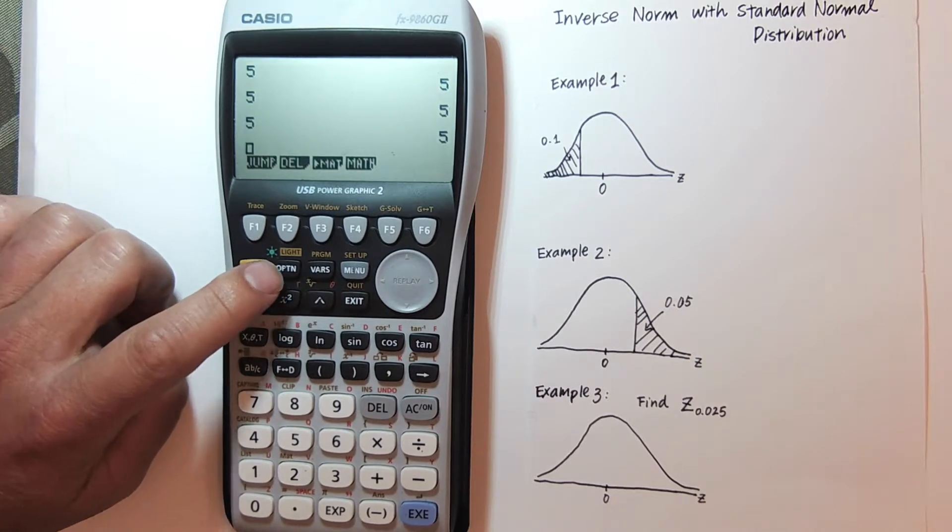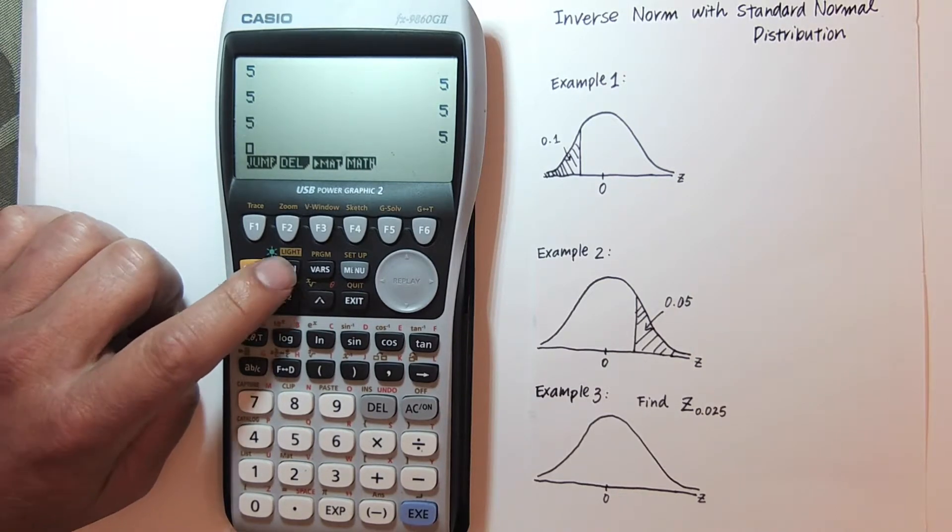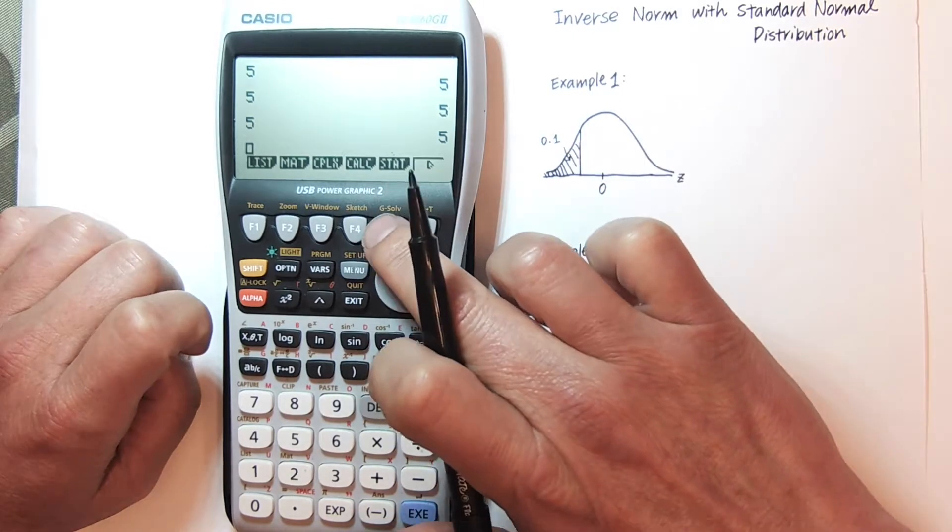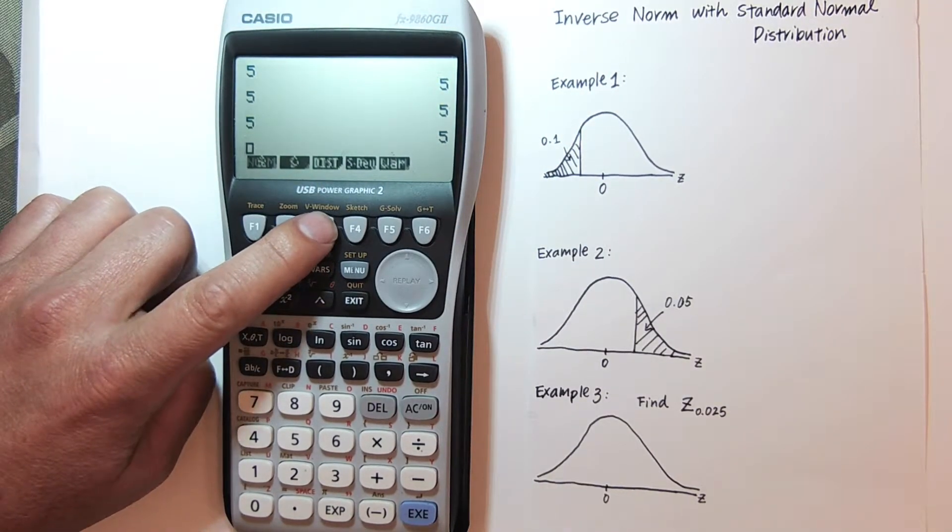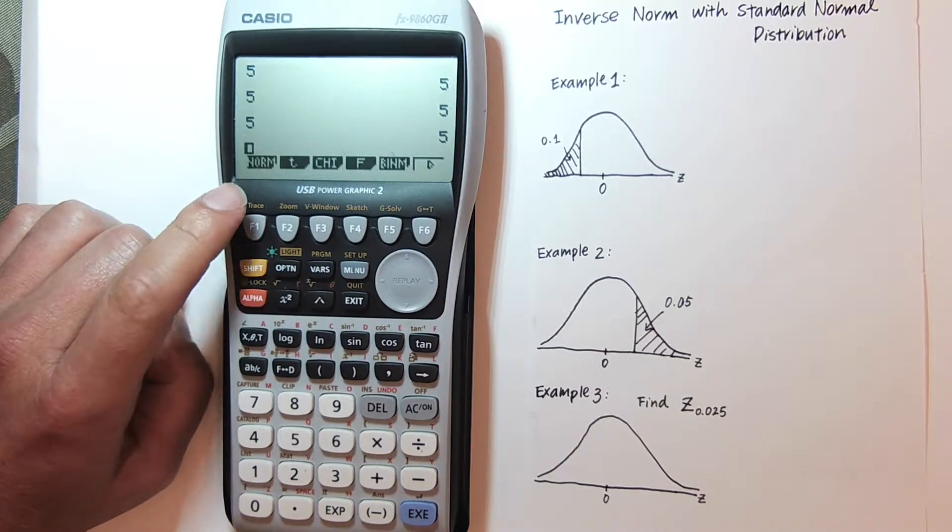First off, I'm going to find my distributions. I'm going to hit option, go to statistics in my distributions, F3, and now I'm going to go to norm, which is F1.